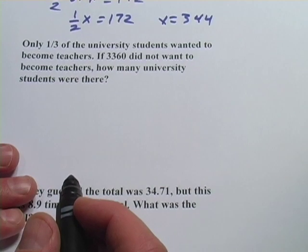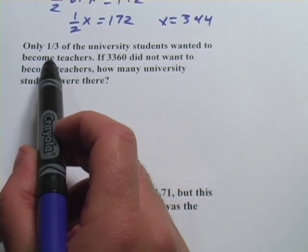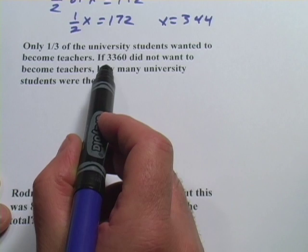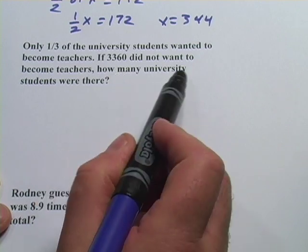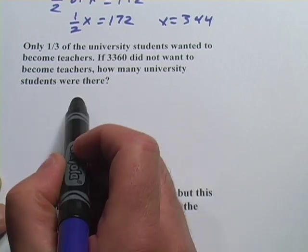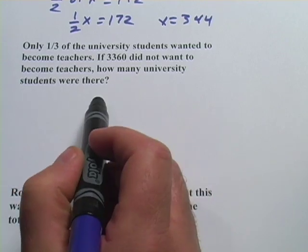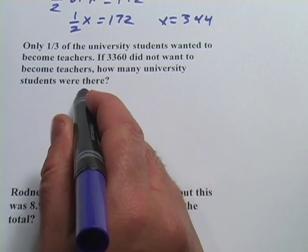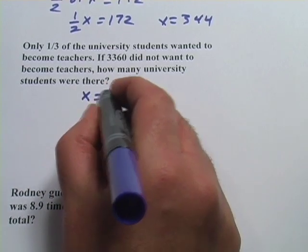Let's try the next one. This one says only one third of the university students wanted to become teachers. If 3360 did not want to become teachers, how many university students were there? So we're looking for the total number of university students, so we're going to call that x. That's the total students.